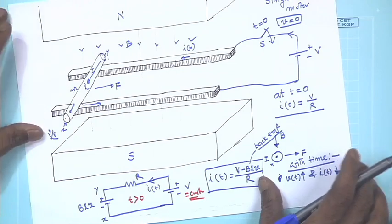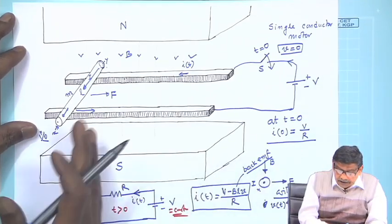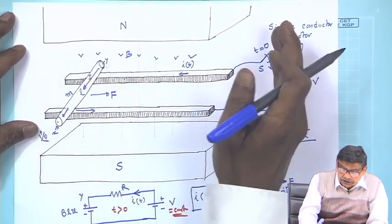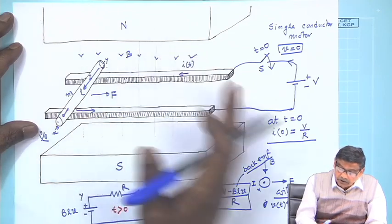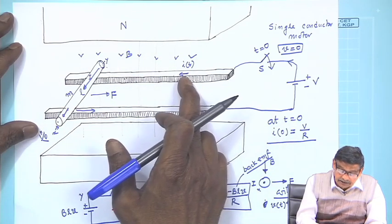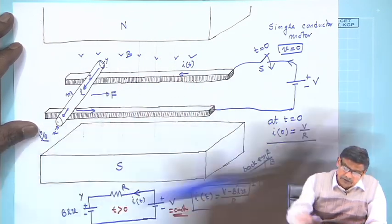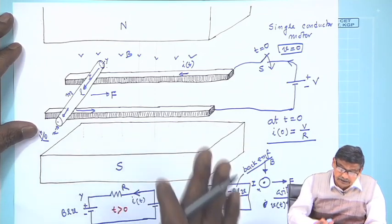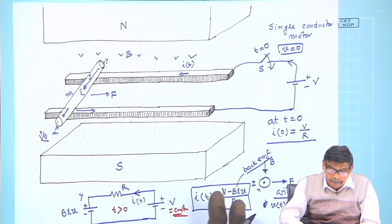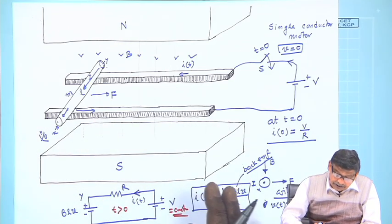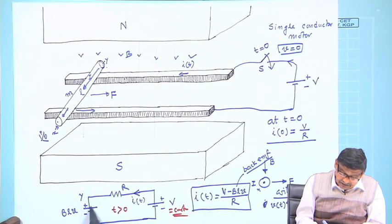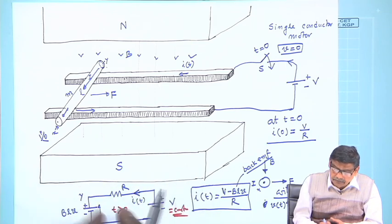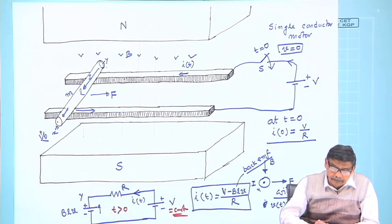Let us see physically what is happening. You switch on the supply and it starts accelerating. As long as current is present, BIL force is there, so it will keep accelerating. As velocity increases, the back EMF will also go up, thereby the current value will decrease.